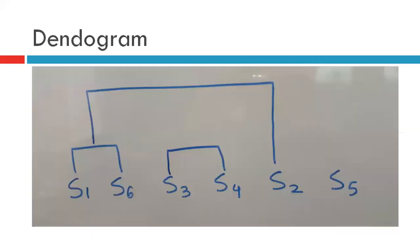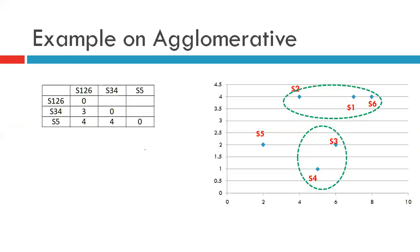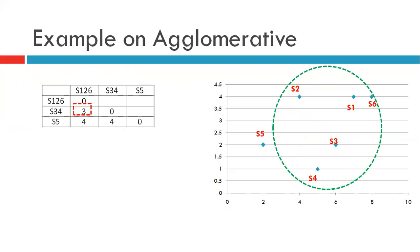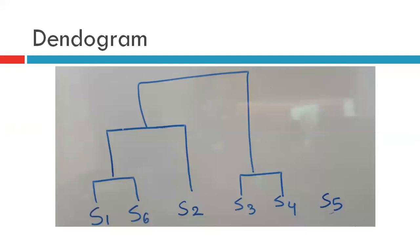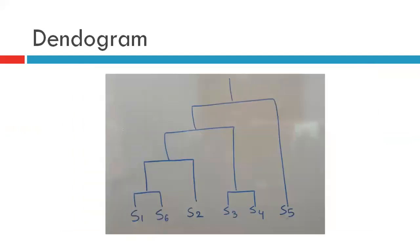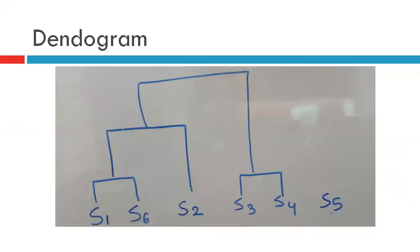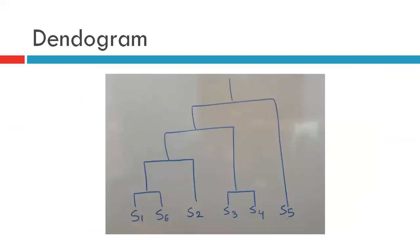This is forming one big cluster now. This is how our dendrogram looks. Similarly, we move ahead to the next iteration, finding the distance between cluster s126 and s34 and s5. We update the distance matrix, identify the minimum distance, and merge the clusters. Our updated dendrogram now reflects this merge. Finally, only s5 is left and s5 will also eventually be merged. Our final dendrogram looks like this.